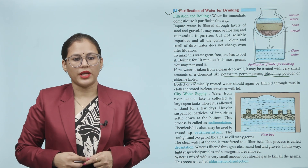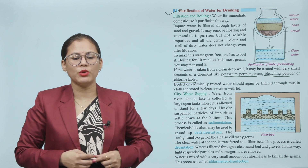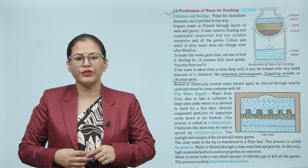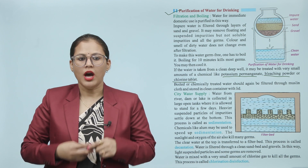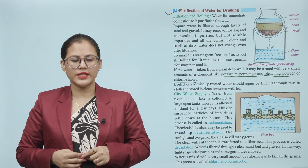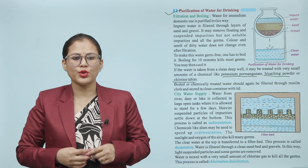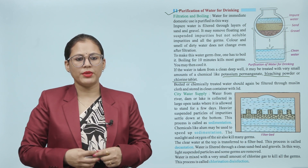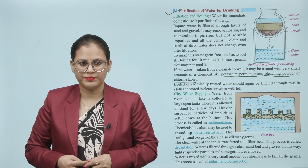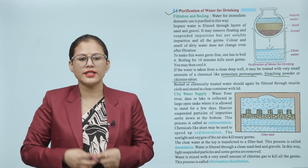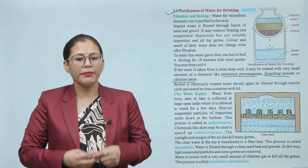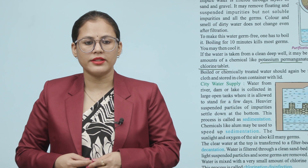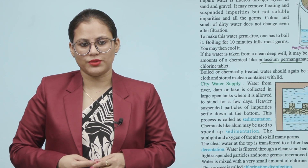City water supply. Water from a river, dam or lake is collected in large open tanks where it is allowed to stand for a few days. Highly suspended particles of impurities settle down at the bottom. This process is called sedimentation. Chemicals like alum may be used to speed up sedimentation. The sunlight and oxygen of the air also kill many germs. The clear water at the top is transferred to a filter bed. This process is called decantation.